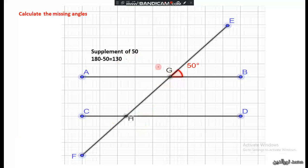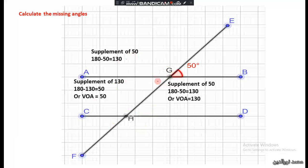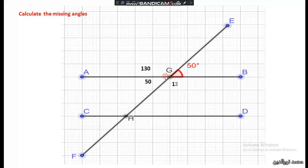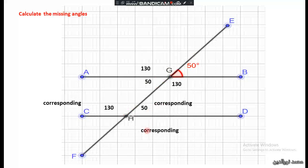The supplement of 50 is 130, and vertically opposite angles with 130 are also 130. This angle is corresponding with this one — it's 130. This angle is corresponding with another — it's 50. This one is corresponding and equals 130, and finally this angle is corresponding and equals 50 degrees.